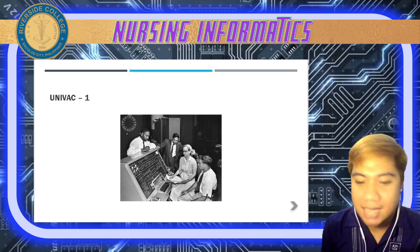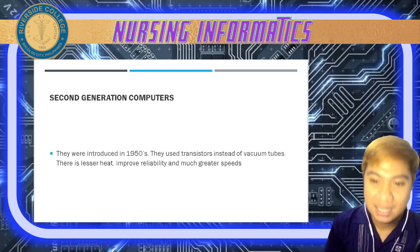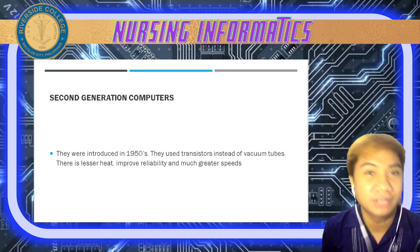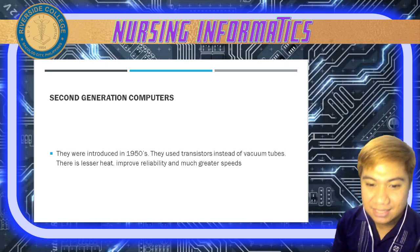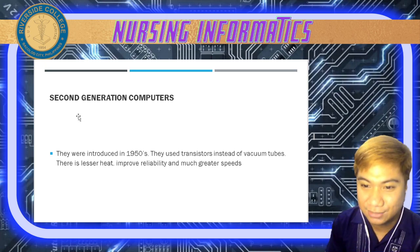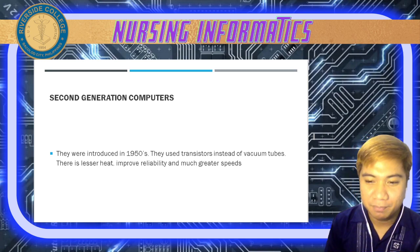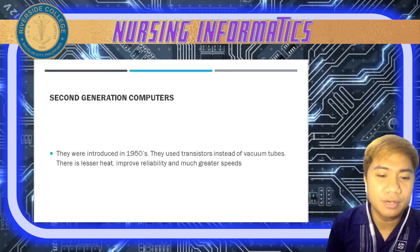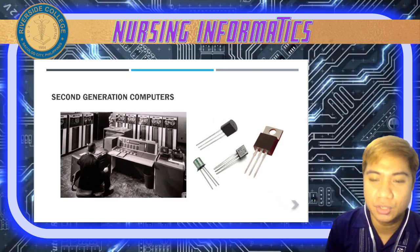Next we have second generation computers, introduced in the 1950s. They used transistors instead of vacuum tubes, producing lesser heat, improved reliability, and much greater speeds. They were still quite large but transistors were smaller. Examples of second generation computers include the IBM 1401 and IBM 1620.